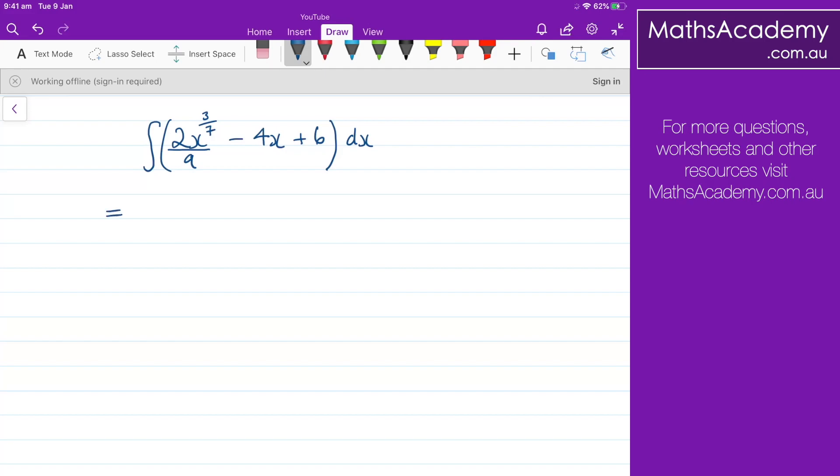Now the first thing I'm going to do is write that 2 over and line that fraction. We're going to multiply that by the integral of x to the power of 3 over 7.